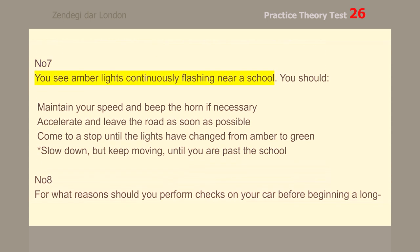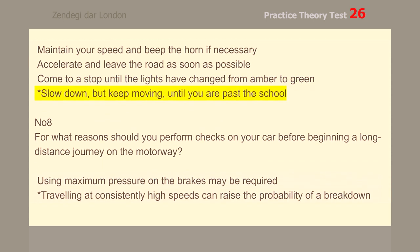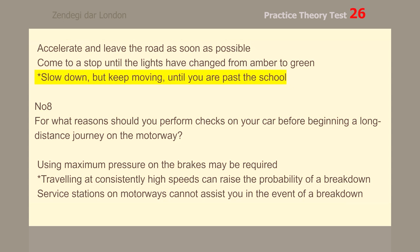Number 7. You see amber lights continuously flashing near a school. You should slow down, but keep moving, until you are past the school.